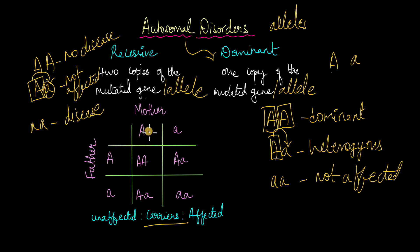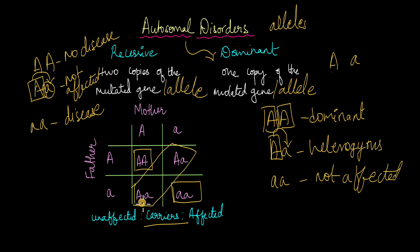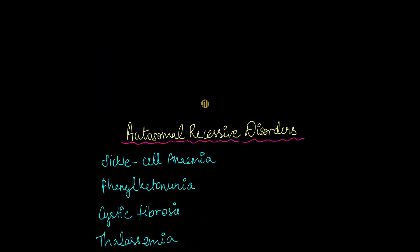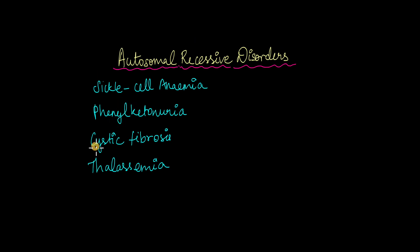Let's look at the inheritance pattern of offspring of two carrier people. The mother is a carrier and the father is also a carrier — so they are both heterozygous. One in four offspring will not have the disease because they will be homozygous dominant. One in four will be affected because they are homozygous recessive. The remaining 50% are carriers — they don't have the disease but can pass it on to future offspring. Examples of autosomal recessive disorders include sickle cell anemia, phenylketonuria, cystic fibrosis, and thalassemia.